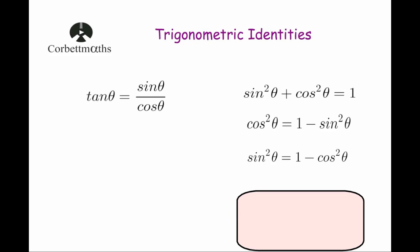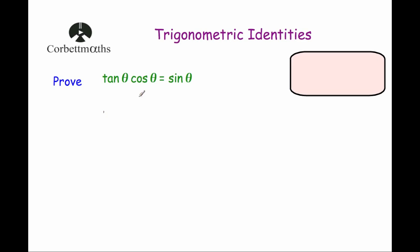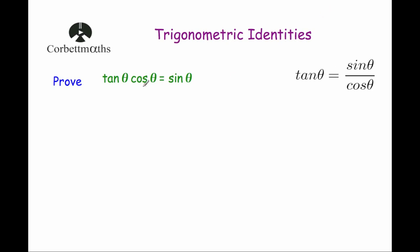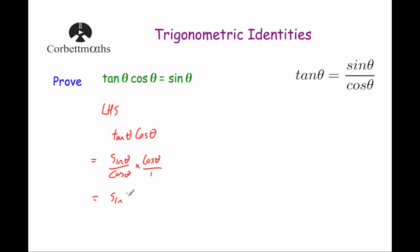Let's look at a couple of questions using these trig identities. The first question says: prove tan θ cos θ = sin θ. We'll use the identity tan θ = sin θ / cos θ. Starting with the left hand side: tan θ cos θ becomes (sin θ / cos θ) × cos θ. Multiplying gives sin θ cos θ / cos θ, the cos θ cancels, and we're left with sin θ. So we've proved tan θ cos θ = sin θ.